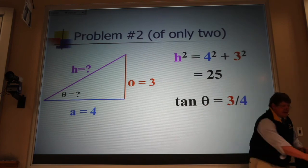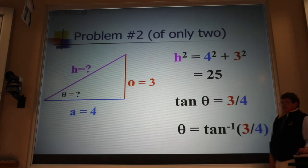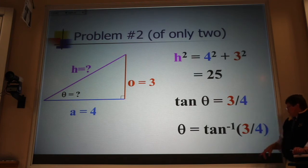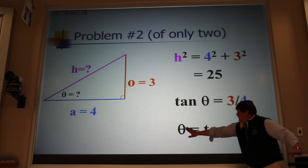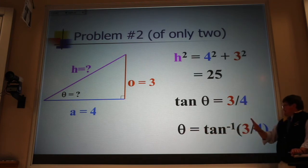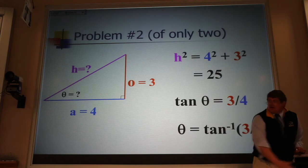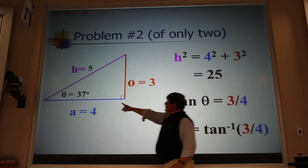Now, the way I find that angle is I use the inverse tangent function. On your calculator, it's the same button as the tangent button. It's just got a function key that you've got to hit before that. So I read this: theta is the angle whose tangent is 3/4. And if you plug that into your calculator, what you find is 37 degrees.